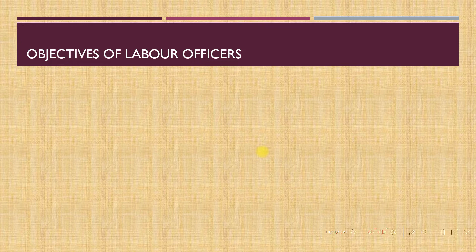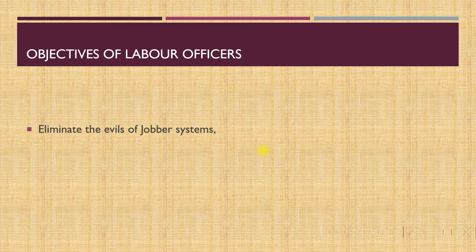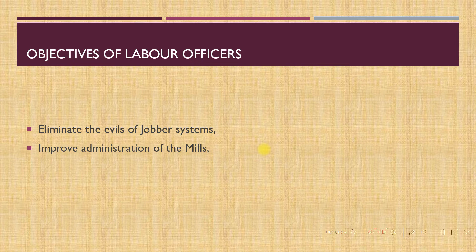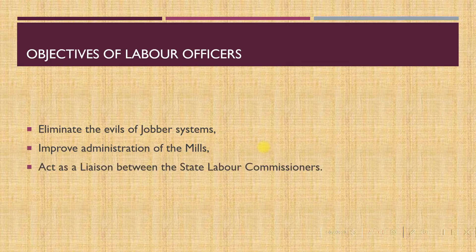The main objectives of labour officers are: to eliminate the evils of the jobber system, to improve the administration of the mills, and to act as a liaison between state labour commissioners.